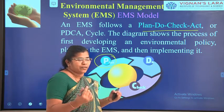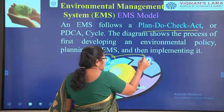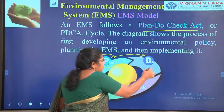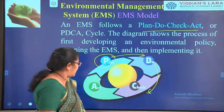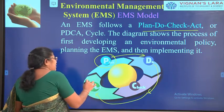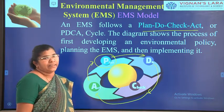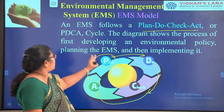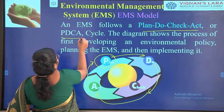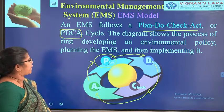First we have to plan what we have to do. Many will plan but not execute — so the next step is to do what we actually want to do. Then we have to check whether what we are doing is right or wrong. The last step is to act: if something is wrong, I have to act to correct it; if it is right, continue. This is the process to enhance the EMS — the PDCA cycle: Plan, Do, Check, and Act.